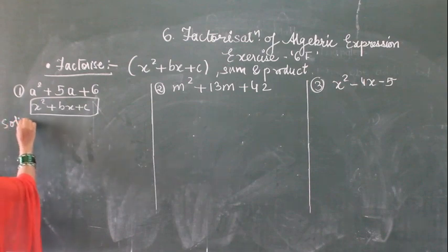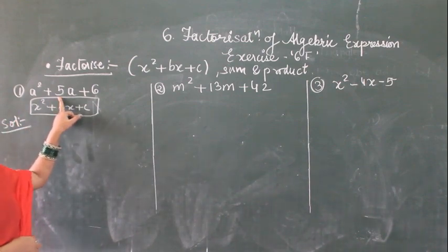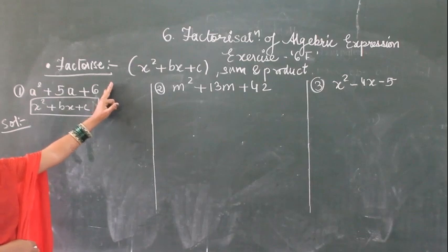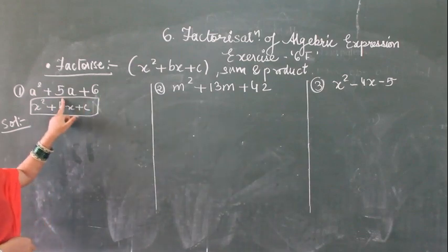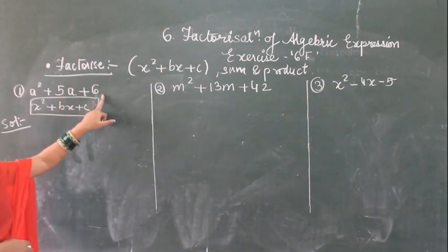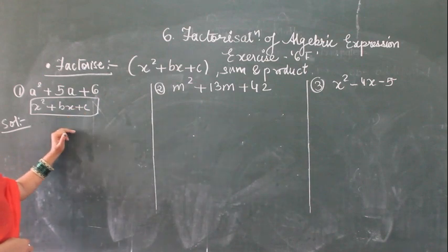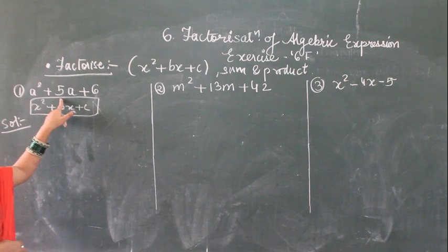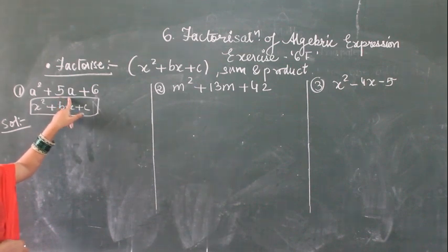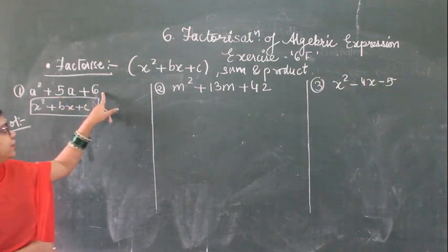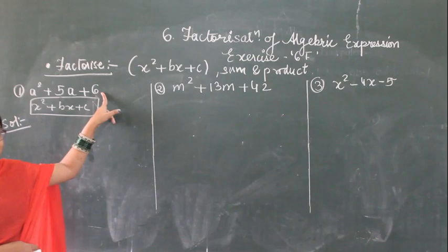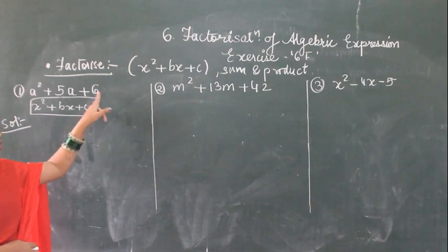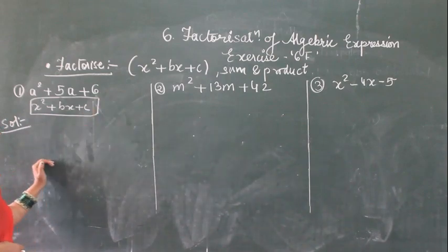We have to look at the middle term and the last term. We have to take two such numbers that the sum will be equal to the middle term and the product will be equal to the last term. So let's see with the first example.